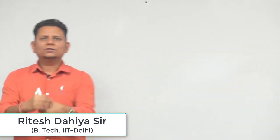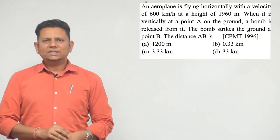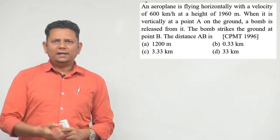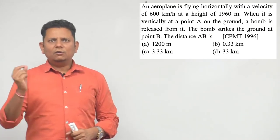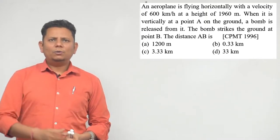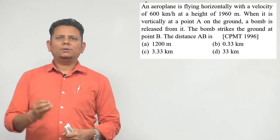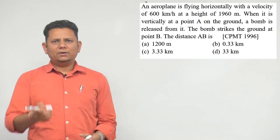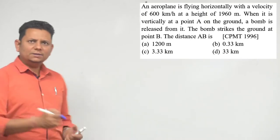Next question says an aeroplane is flying horizontally with a velocity of 600 km per hour at a height of 1960 meters. When it is vertically at a point A on the ground, a bomb is released from it. The bomb strikes the ground at point B. The distance A-B kya hoga? You need to find the horizontal range here. Simple question.